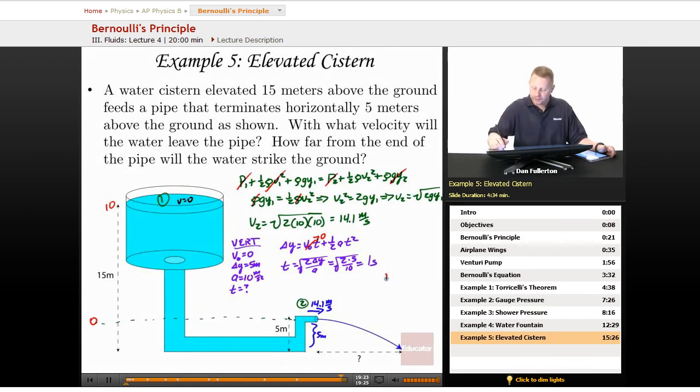Now I can use my horizontal kinematics to figure out how far it goes. Horizontally, the velocity is going to be a constant, 14.1 meters per second. It's going to be in the air 1 second. So delta x is just going to be velocity times time, 14.1 times 1, or 14.1 meters.